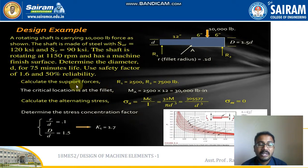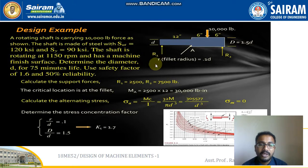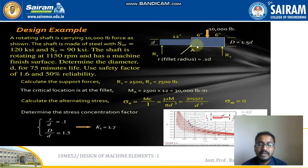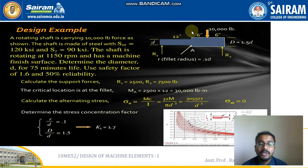Let me write down the given data and start the problem with the support forces. After resolving the forces, R1 is 2,500 LB and R2 is 7,500 LB. The critical location is at the fillet. The bending moment equals force times perpendicular distance: 2,500 × 12 inches = 30,000 LB·in.